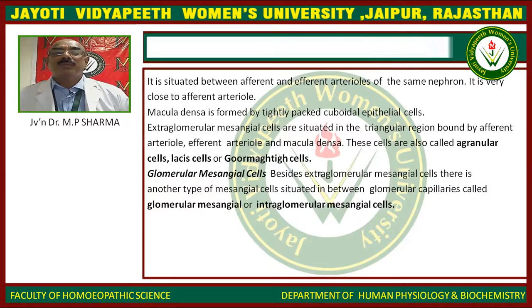Extraglomerular mesangial cells are also called granular cells, lacis cells, or Goormaghtigh cells. Besides extraglomerular mesangial cells, there are also glomerular mesangial cells.